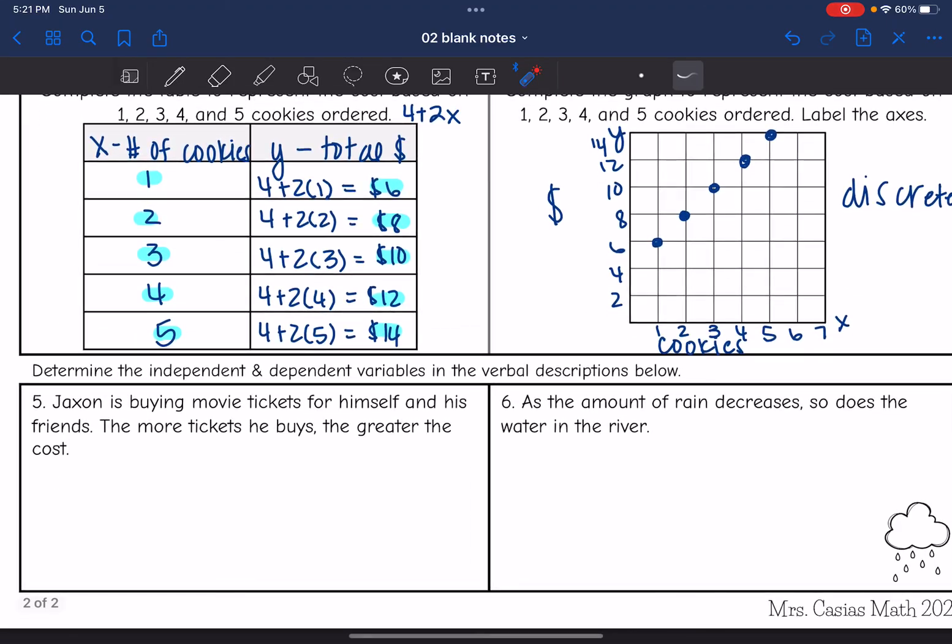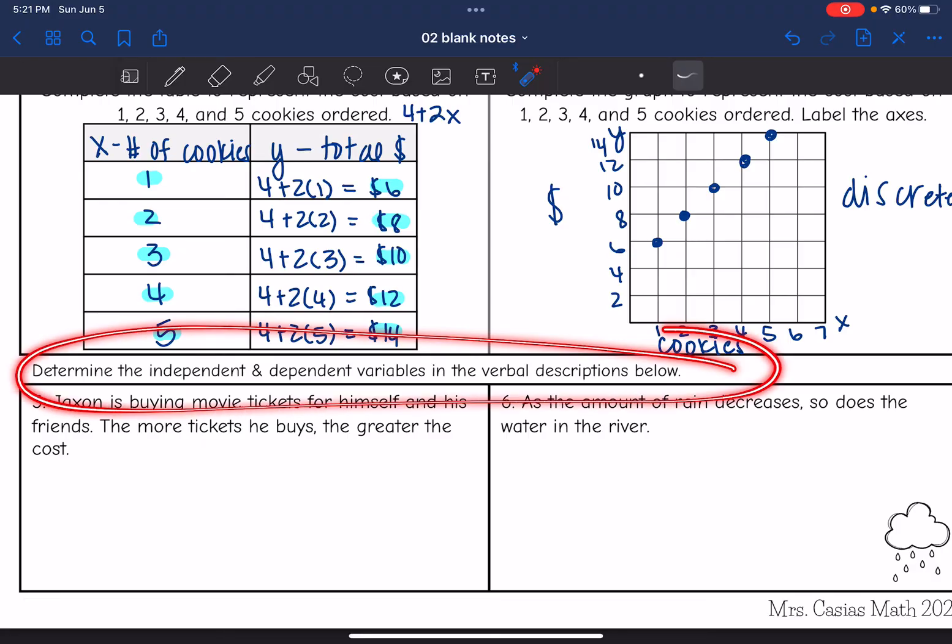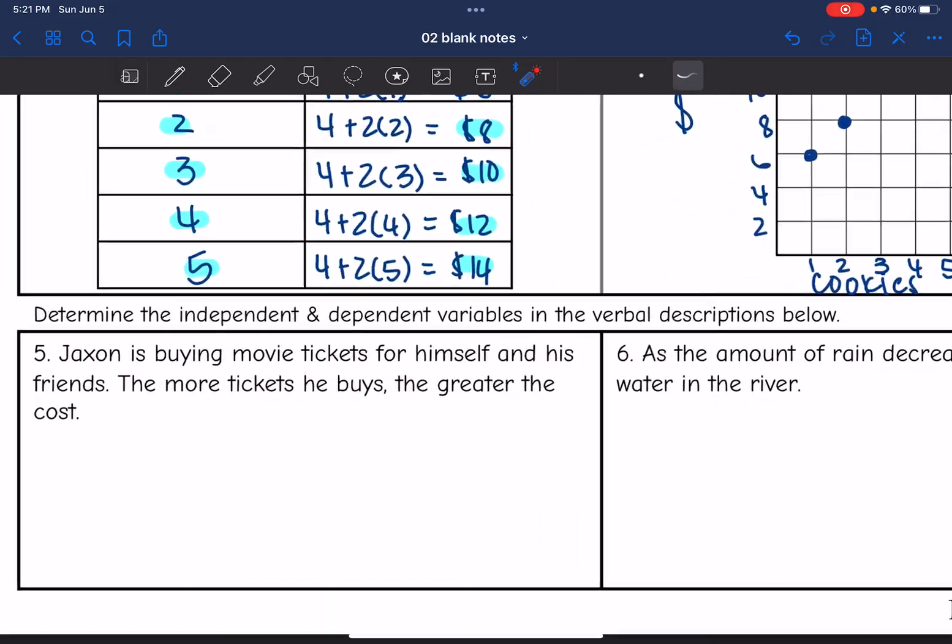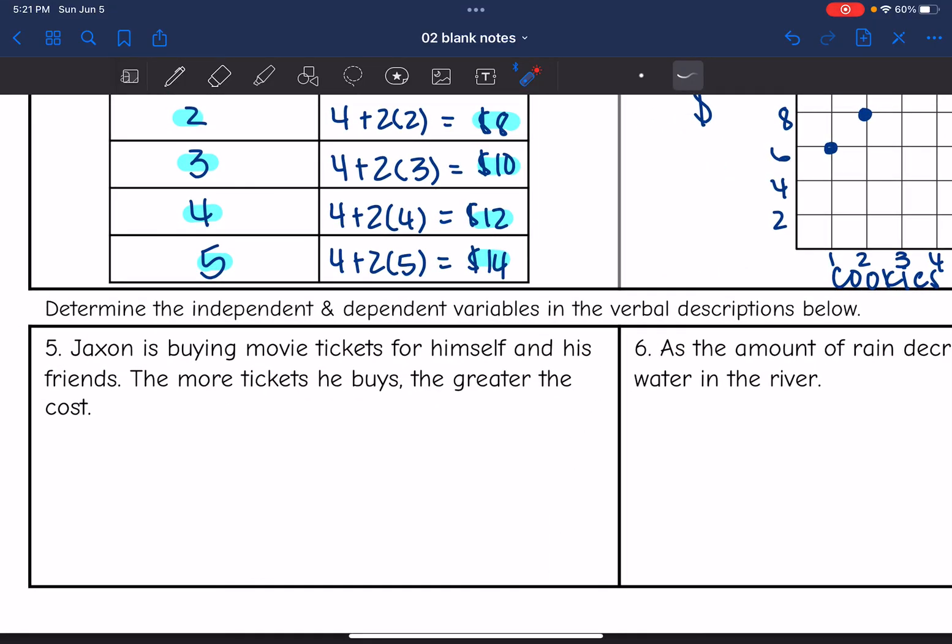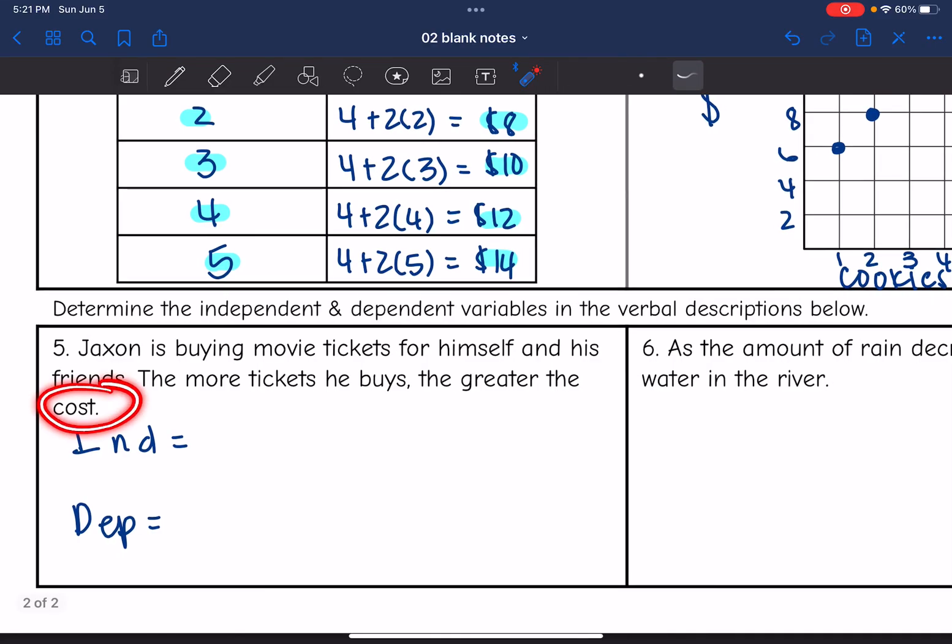All right, let's look at 5 and 6. It just wants us to determine the independent and dependent variables in these descriptions below. So number 5 says Jackson is buying movie tickets for himself and his friends. The more tickets he buys, the greater the cost. So I need to determine the independent and the dependent. So the dependent is the output, and it seems like the output is going to be the total cost. And what is going to determine that is how many tickets he buys.